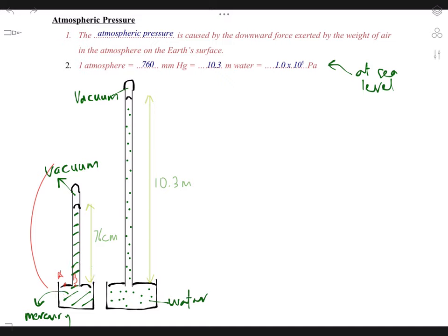Pay attention here. As we have learned earlier, at the same level pressure is the same for the same degree. So we have pressure at point A equals pressure at point B. So pressure at point A is actually atmospheric pressure.